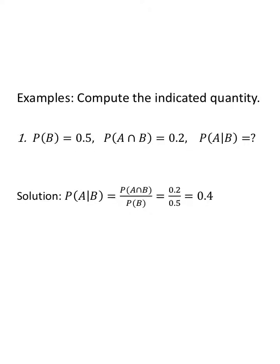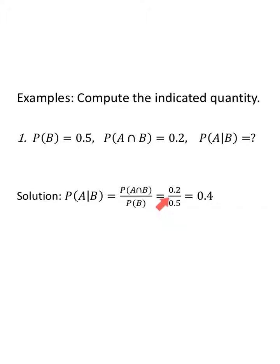So let's compute the indicated quantity. If we know the probability of B is 0.5 and the probability of the intersection is 0.2, then to find the probability of A given B, using our formula, we take the intersection divided by the probability of B: 0.2 divided by 0.5 is 0.4.